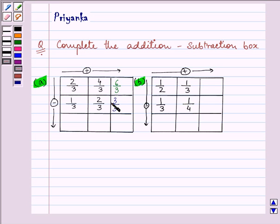Further, we need to subtract. 2 minus 1 will give us 1/3. 4 minus 2 will give us 2, and we have 3 in the denominator.